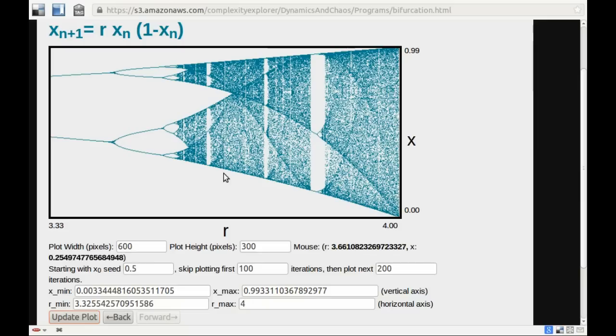But in the midst of chaotic regions of parameter values, there are windows of periodic behavior. We've looked at this window of period 5. Here's the window of period 3.